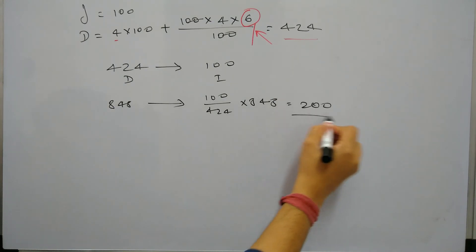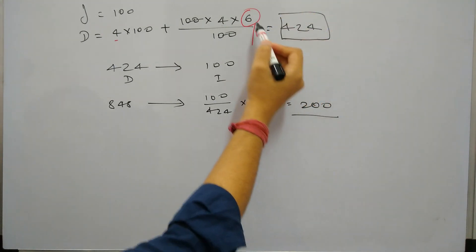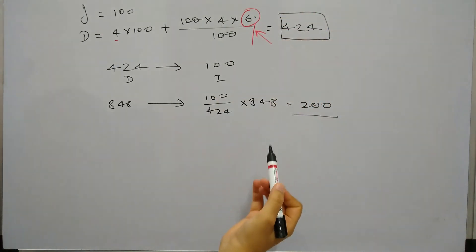Which is 200. So installment will be 200 rupees per year in this case. So you just need to get this number, and to get this number you only need this and then it is straightforward.